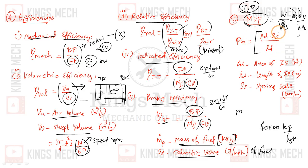For the mean effective pressure formula, it's A times S divided by L, where A is the area of the indicator diagram. From the indicator diagram concept, you'll get the area, length, and spring scale. Multiplying A times S divided by length gives the mean effective pressure in bar.